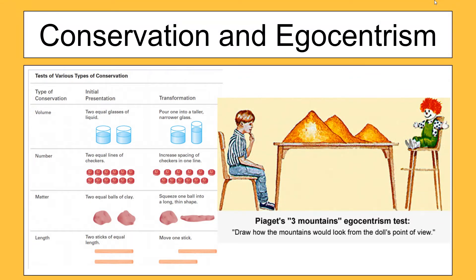When it comes to being egocentric, Piaget used the famous volcano or mountain task, pictured on the right hand side. Children basically really struggled with explaining what the person on the other side of the mountain could see or what they might draw. When you ask the child what the doll can see, the child normally would just explain what they themselves can see. So that's the end of stage two.